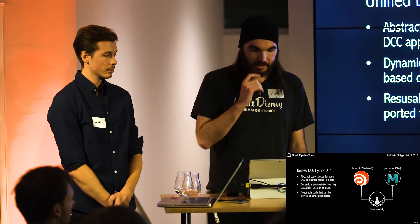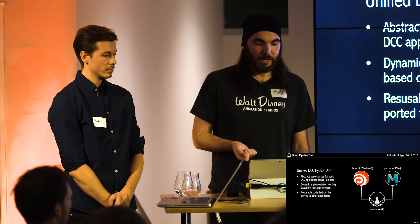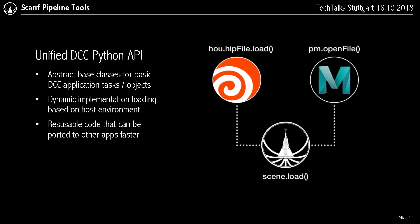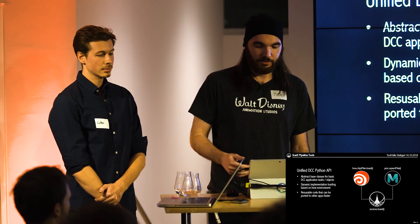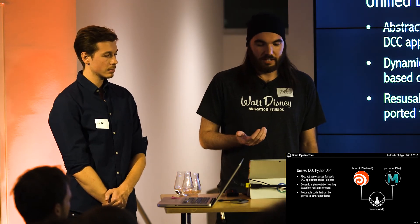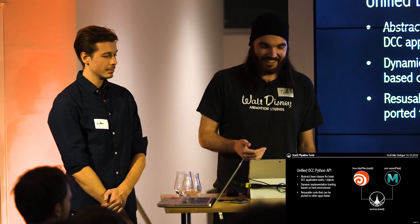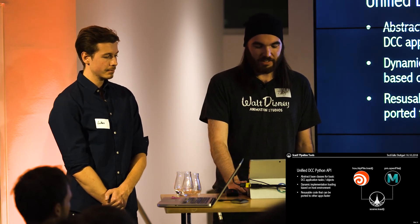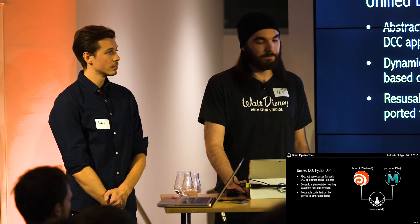Another feature we wanted was a unified Python API, at least on a basic level. You have operations you do all the time in DCC applications — load a file, reference a file, rename a node — and currently you write the tool for Houdini and write the tool for Maya separately. With our API you write it once and have a layer that translates that action into the actual command each tool needs. This makes the code more readable and more portable when we add a new application.